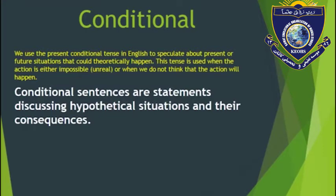Conditional sentence — what is it? We use the present conditional sentence in English to speculate about a present or future situation that could theoretically happen. It means theoretically it's not real — we are just imagining that this action will happen. This sentence is used when the action is either impossible, unreal, or when we do not think that the action will happen. Conditional sentences are statements discussing hypothetically a situation and their consequence.